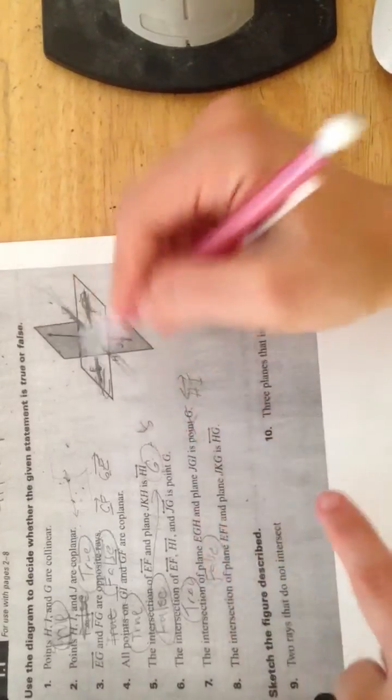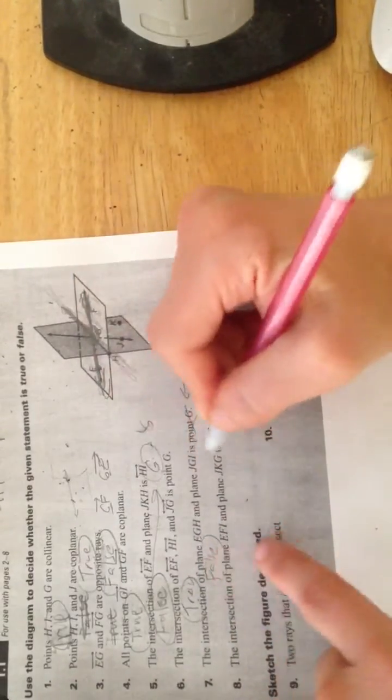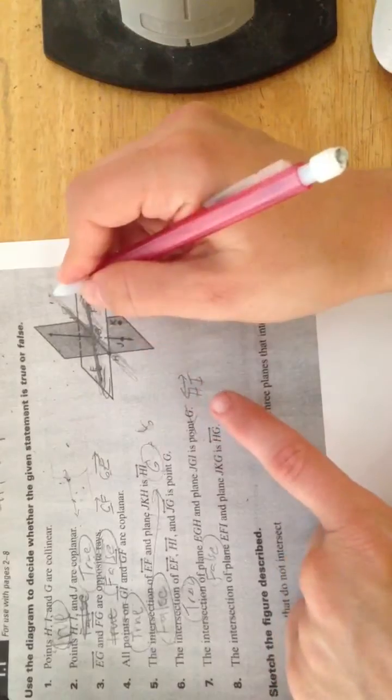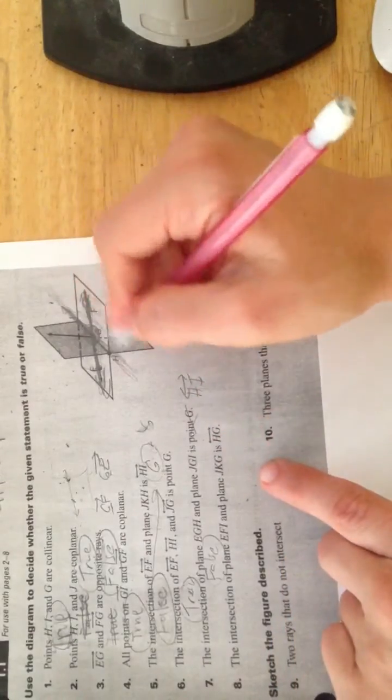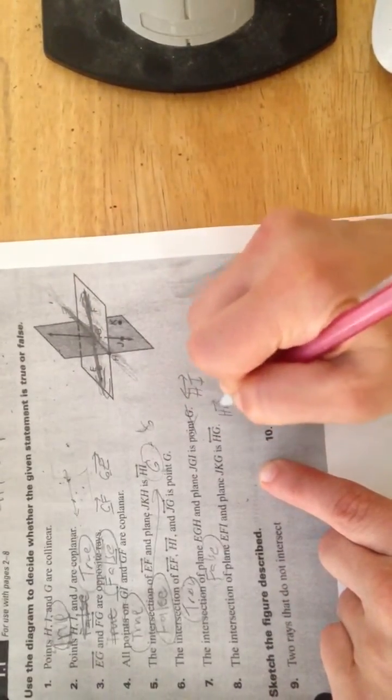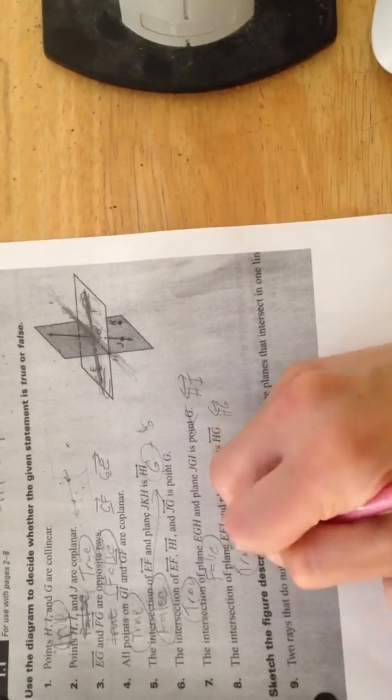And now I called this HI, but you could also call that line HG. You can name it with any two points, so this is very true here.